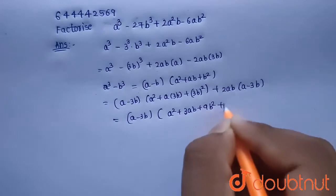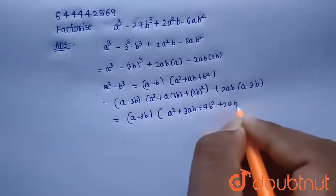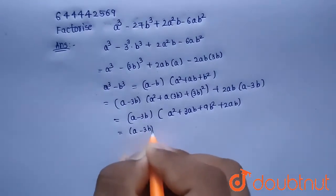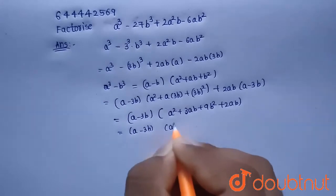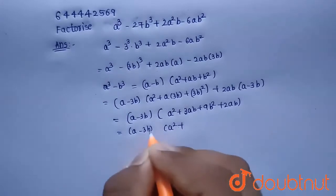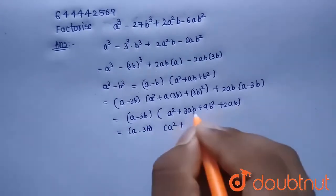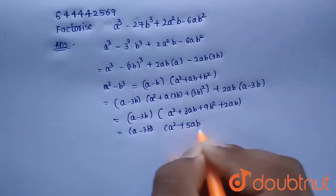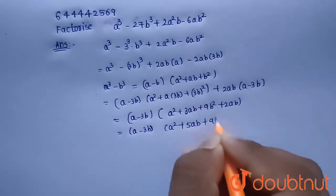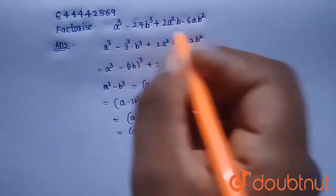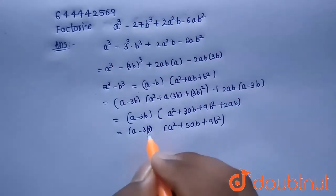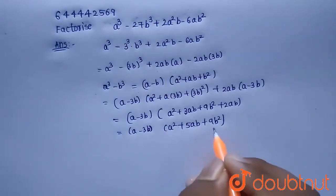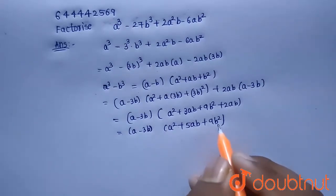Taking (a minus 3b) as a common factor, and combining 3ab plus 2ab to get 5ab, the factorization of the given expression is (a minus 3b)(a² plus 5ab plus 9b²).